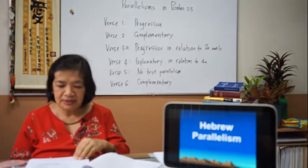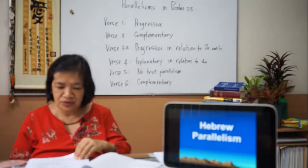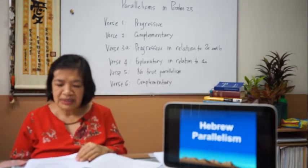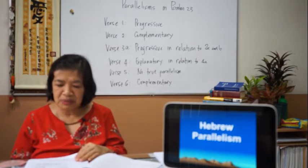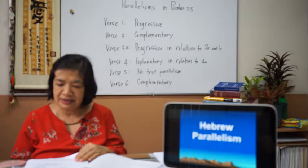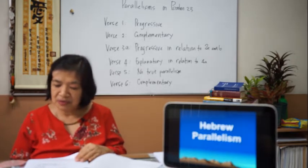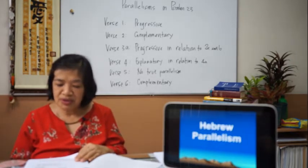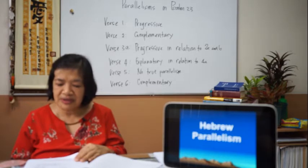Letter C is numerical parallelism. A number in the first line corresponds to a higher number in the next line. So you have shalosh and then arba — 'Three things are not satisfied; four things do not say enough.'